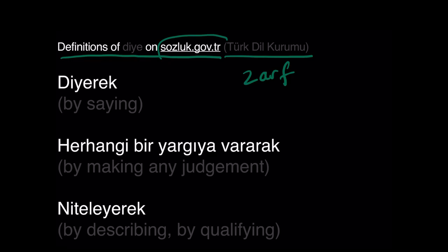I'm going to show you some examples and you're going to understand what I mean. Diyerek, which means by saying. It looks like diye, right? Yeah, because they are brothers. But diye is an old formation, so he is the elder one. Herhangi bir yargıya vararak — by making any judgment. And niteleyerek, which means by describing, by qualifying.